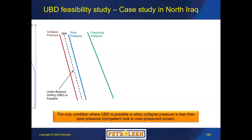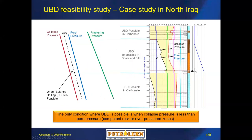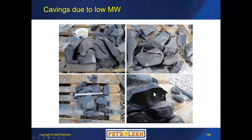We talked about underbalanced drilling — here is the result of a study we did for a case in northern Iraq. The client wanted to drill underbalanced, so we showed them the condition: the collapse gradient must be lower than pore pressure. The collapse gradient in the shaley siltstone section above the carbonate reservoir was significantly above pore pressure, so the answer was a clear no for underbalanced drilling in that section. In the reservoir the rocks were strong enough and underbalanced was possible. They didn't listen to us, drilled underbalanced, got massive cavings, a nuclear logging tool got stuck in the well, and they had to do fishing for about three months.